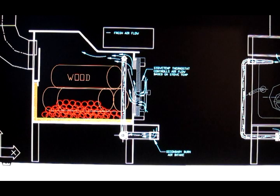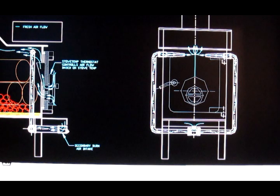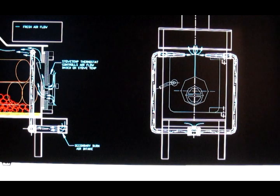The secondary burn air comes in at the top, it basically comes in here, it splits, and it goes around the outside of the stove. Now these are made out of copper so the radiant heat from the stove heats the air and then there's nozzles on the inside.